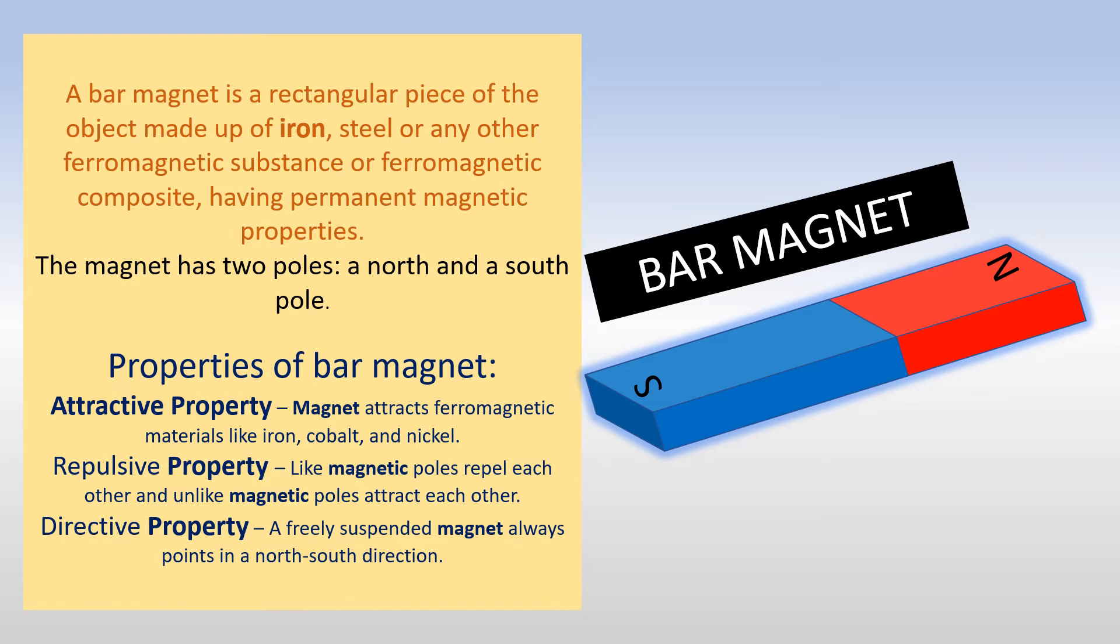A freely suspended magnet always points in a north-south direction. We all know that, right? When you suspend a magnet freely in the air, it always points to the north-south direction. So the main three properties are attractive property, repulsive property and directive property.